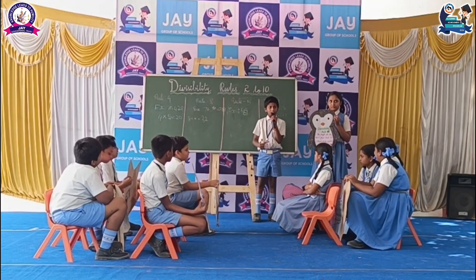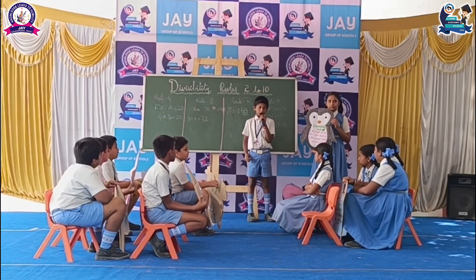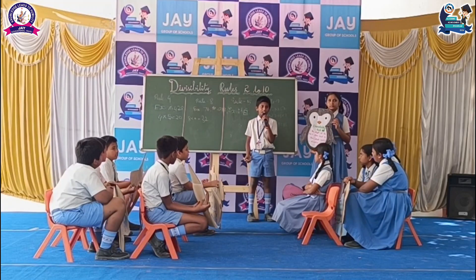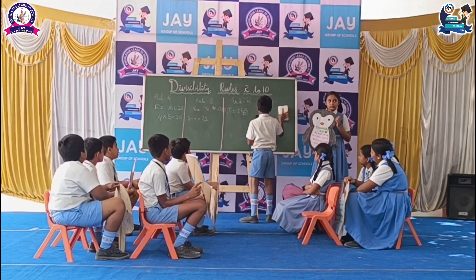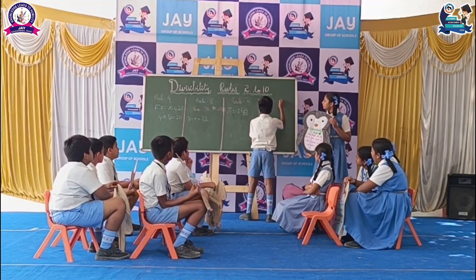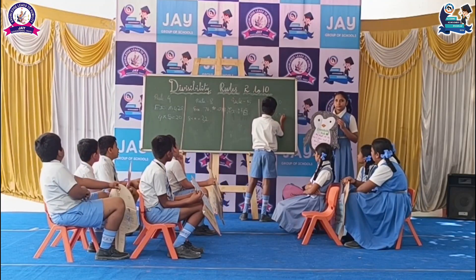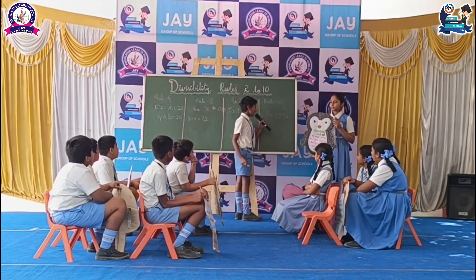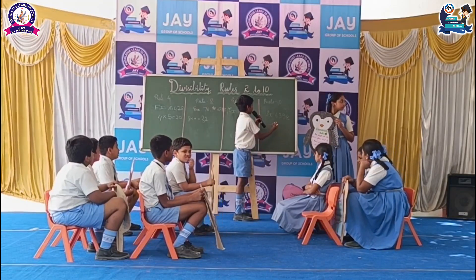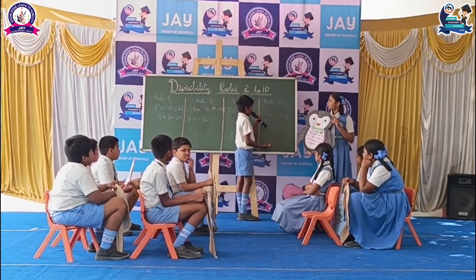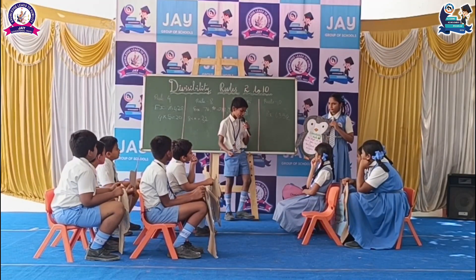Myself is Nelson. Now I am going to share the divisibility rule for table 10. If the one's place digit is 0, then the whole number is divisible by 10. Let's see one example. The number is 6350. What is the one's place? Zero. Our condition is zero, and the one's place is satisfied. So 6350 is divisible by 10.